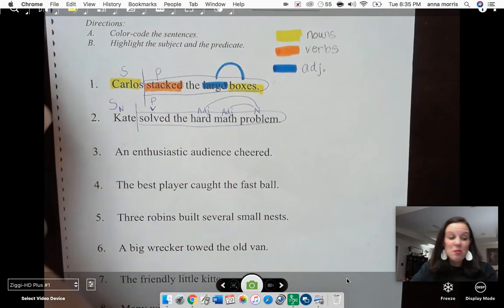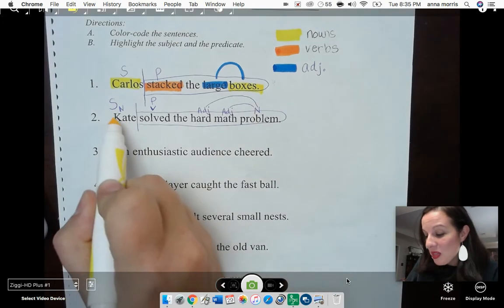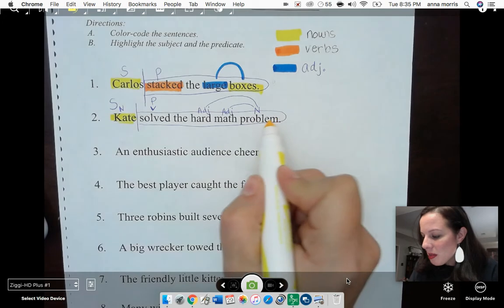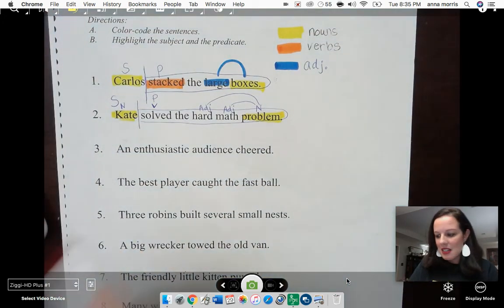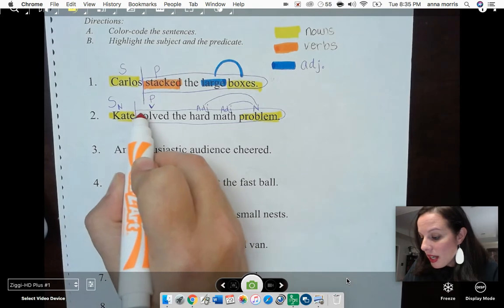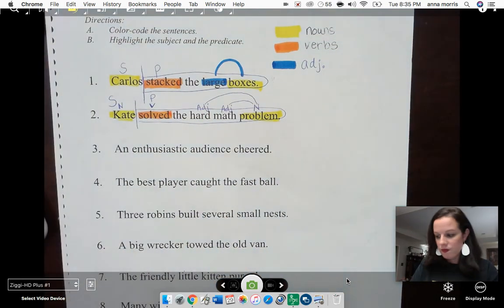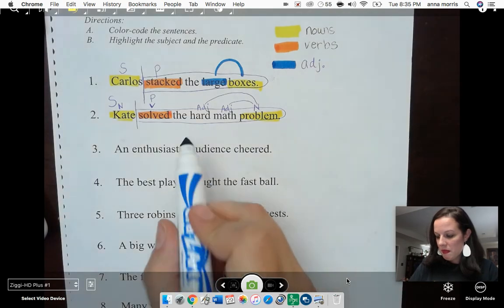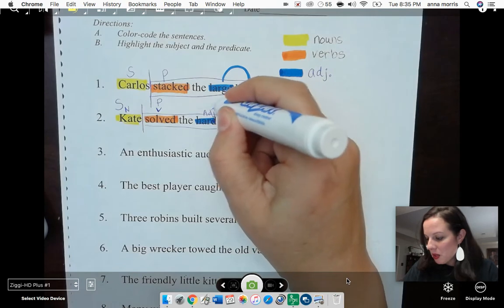Now, because Miss Morris has her colors ready, I'm going to go ahead and code this. My nouns are going to be yellow. My verb is going to be orange. And my adjectives are going to be blue.